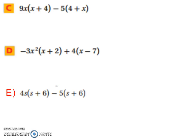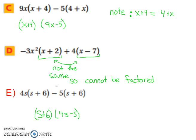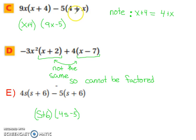Try these next three on your own. When you return to the video, the answer for all three will be revealed. In example c, notice they tried to be a little tricky — they had x plus 4 in the first term and 4 plus x in the next. They look slightly different but are equivalent; adding 4 to x is the same as adding x to 4. So you can write it as x plus 4 times 9x minus 5, or equivalently 4 plus x times 9x minus 5.